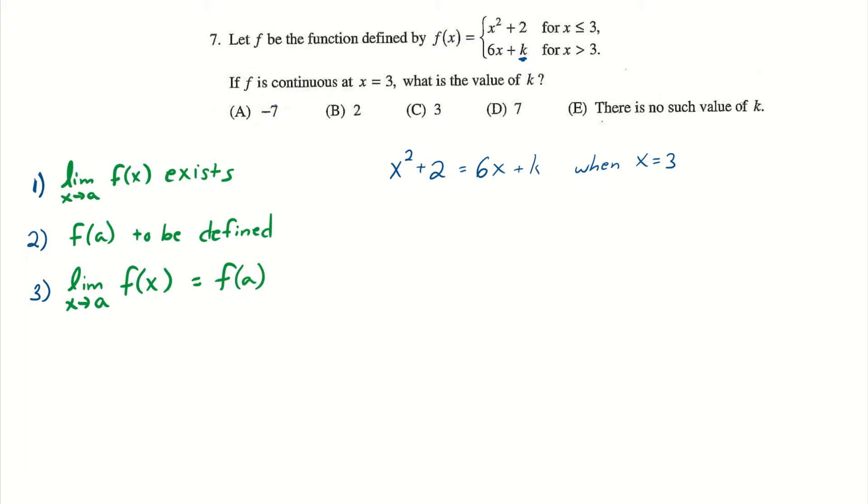So in eyes of that first point, I need that limit to exist. For a limit to exist, it needs to equal the same thing from both sides. That means I need the limit as x approaches 3 of x squared plus 2 to equal the limit as x approaches 3 of 6x plus k. For the x squared plus 2 function, I'm actually looking at the limit as x approaches 3 from the left because it only applies for values less than 3. For the right function, it's from the right because it only applies for values greater than 3. So in order for this limit to exist, these two limits need to equal the same thing.